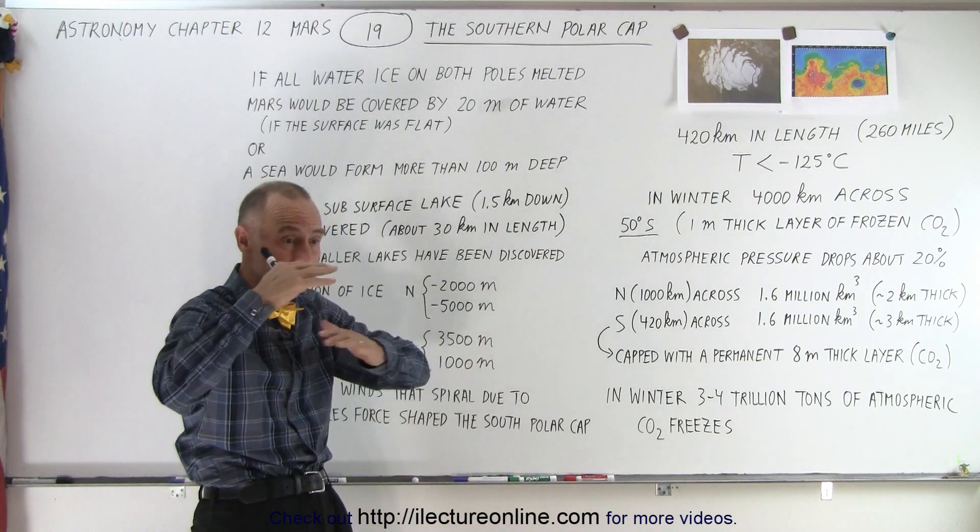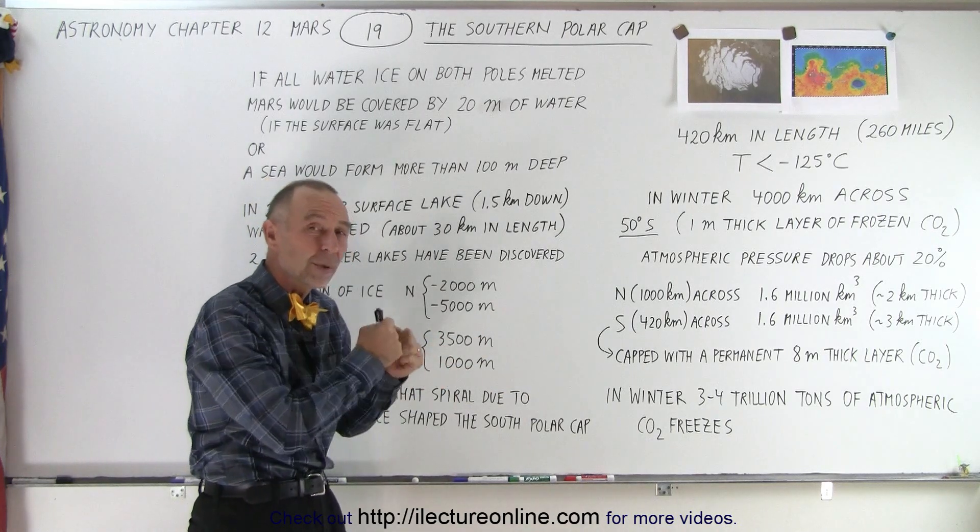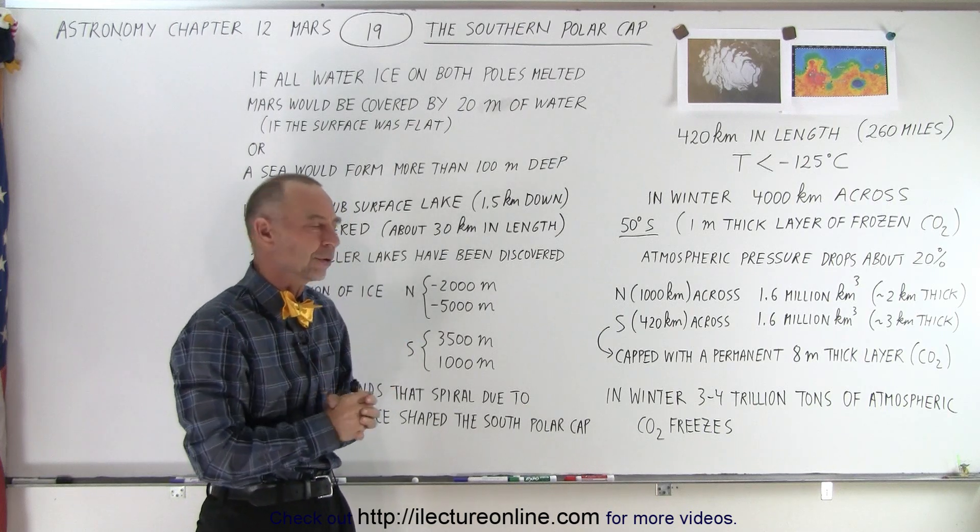So the entire surface of the planet will be under about 20 meters of water or about 60 feet of water. So there's an enormous amount of water ice locked up in the two polar caps.